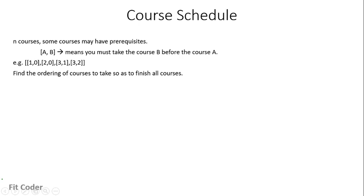The first question is related to course schedule. We are given n courses and some courses have prerequisites. If we are given data in the form of A, B it means we should take course B before course A. We are given a sample input and we have to find the ordering of courses so that a person can finish all these courses.